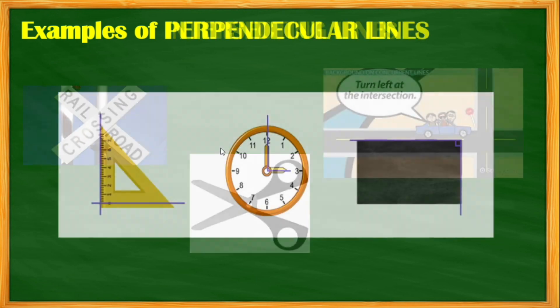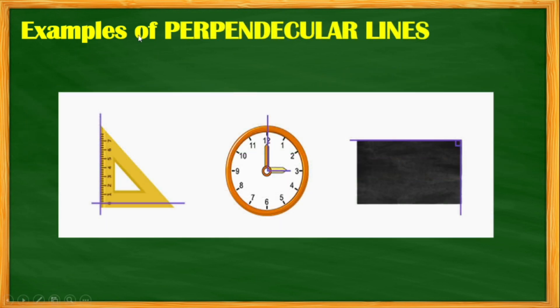Another example of perpendicular line is the isosceles right ruler. Then the clock pointing three o'clock and the edge of the blackboard. That would be the real examples of different pairs of lines.